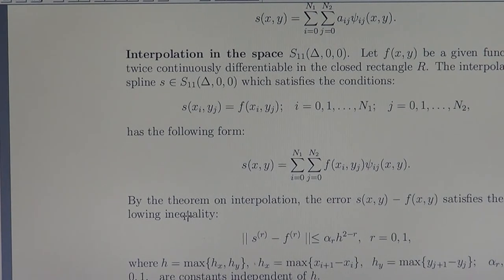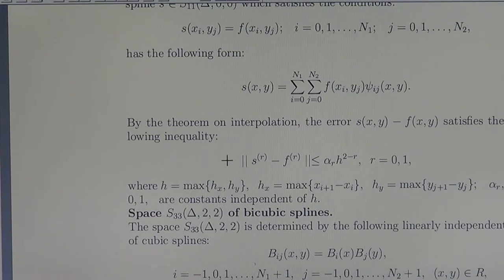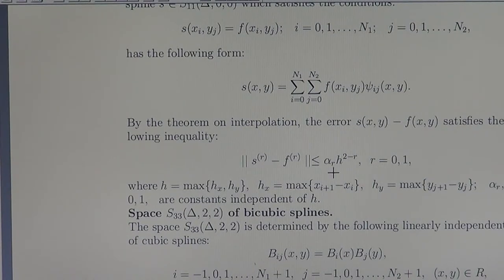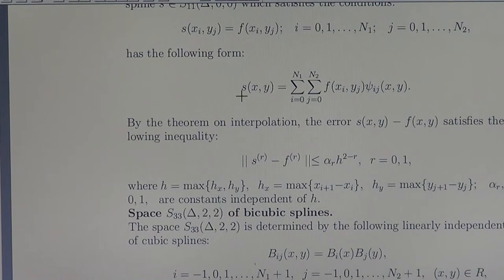By the theorem of interpolation, the error between the interpolating spline and the function satisfies the following inequality. As considered in the one-dimensional case, the same is true for two variables. If r equals zero, the error of interpolation is on the level H squared, where alpha is a constant independent of H, and H is the greatest side of the small rectangles. We have thus constructed the interpolating piecewise linear polynomial and we know how far it is from the given function, together with its derivatives.